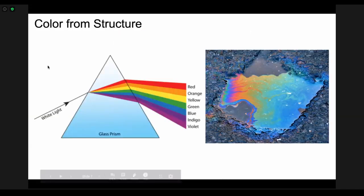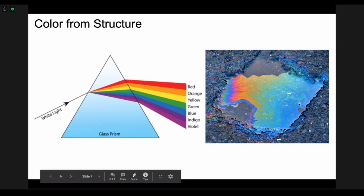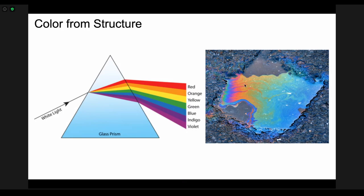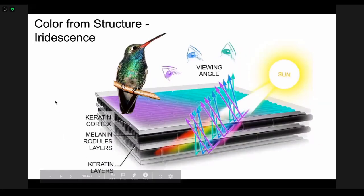So another way that animals can get their color is from the structure of their feathers or their skin. Again we have this structure of the glass prism separating out the white light into all the different colors. This oil slick has different colors, not because there are different pigments causing the color in the oil. There's actually structural differences. Some parts of the oil slick are shallower and some parts are deeper, and so that difference causes different colors to get reflected back to your eye.